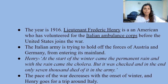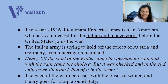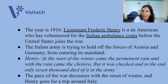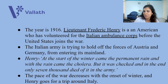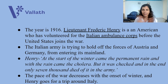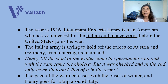The year of the novel is 1916. Lieutenant Frederick Henry is an American who has volunteered for the Italian ambulance corps before the United States joins the war. He has joined as an ambulance driver — he transports patients, military goods, and people. He has a few other drivers under him, and they work for the Italian ambulance corps. Basically, Frederick Henry, whom I will call Henry, is an American living in Italy. The Italian army is trying to hold off the forces of Austria and Germany from entering its mainland.